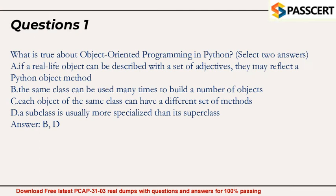Question 1. What is true about object-oriented programming in Python? Select two answers. A. If a real-life object can be described with a set of adjectives, they may reflect a Python object method. B. The same class can be used many times to build a number of objects. C. Each object of the same class can have a different set of methods. D. A subclass is usually more specialized than its superclass. Answer: B, D.